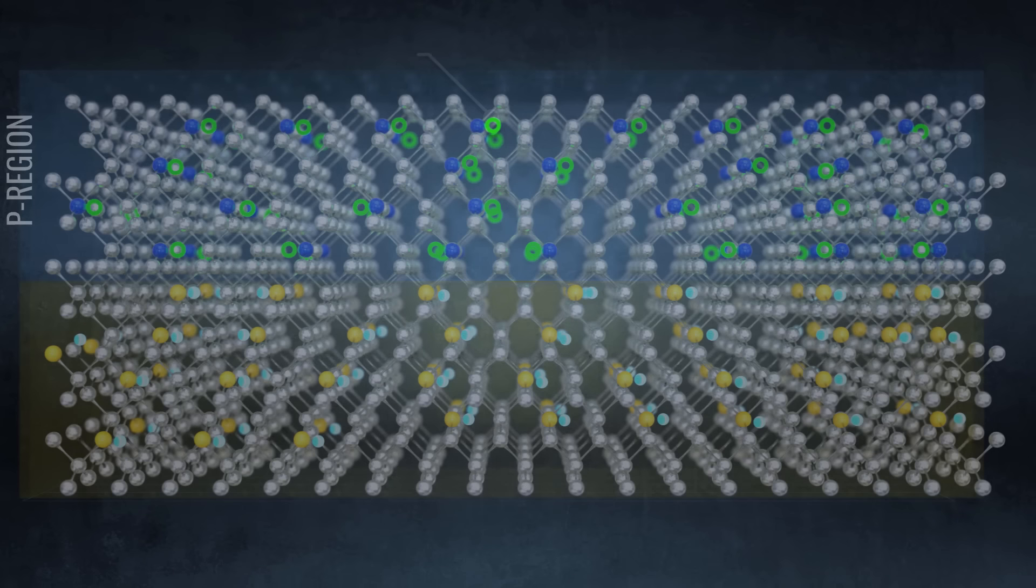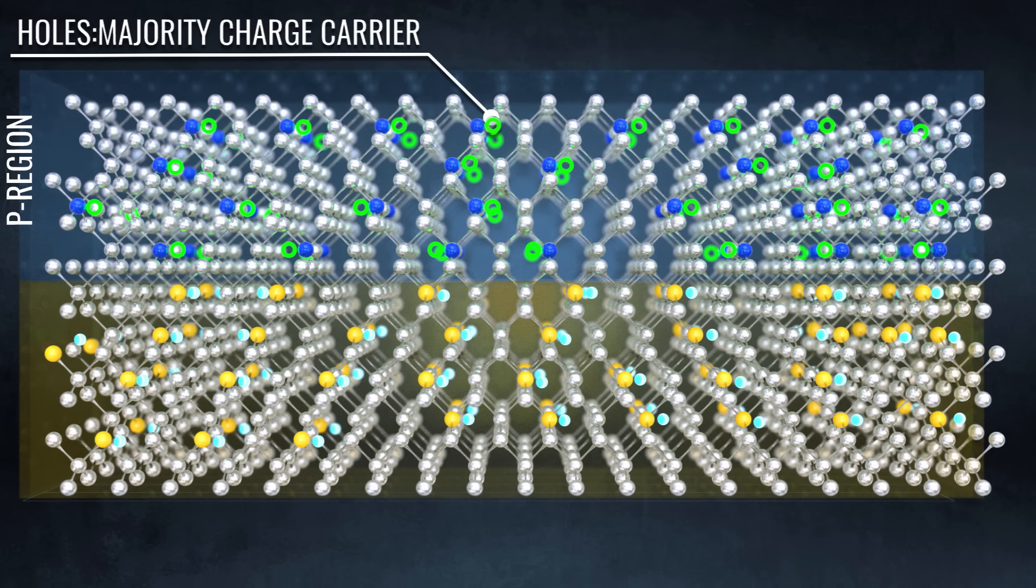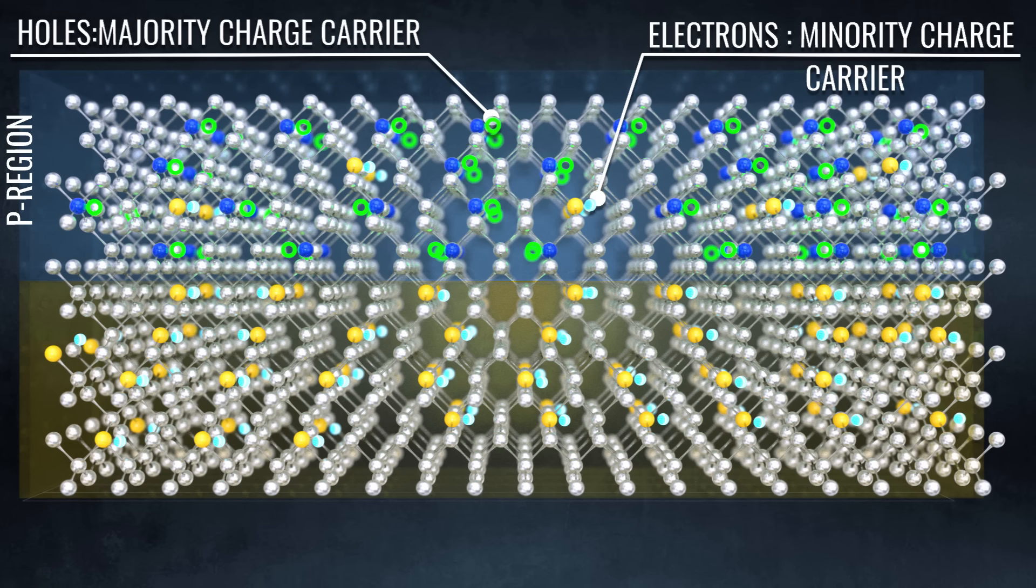In the p-layer, holes are the majority charge carriers. However, it should be noted that there are a few electrons in the p-region as well. We call them minority carriers. It is the same case with the n-region.